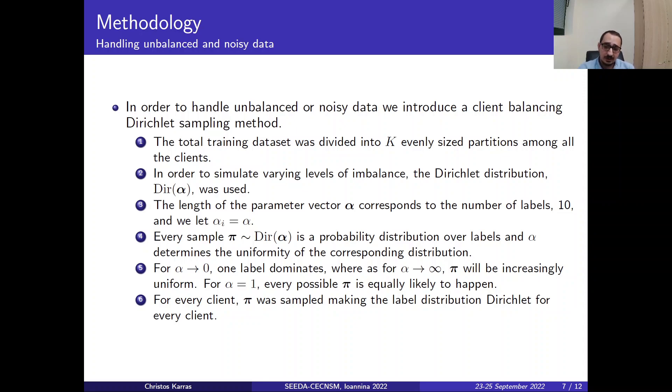And for every sample P we take from the Dirichlet distribution as a candidate distribution over labels, and we set α to determine the uniformity of the corresponding distribution.